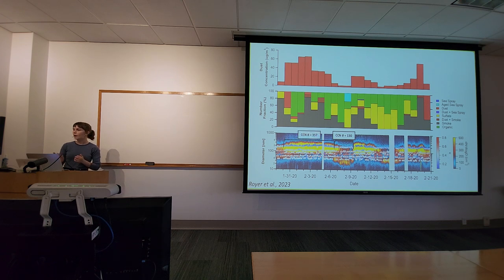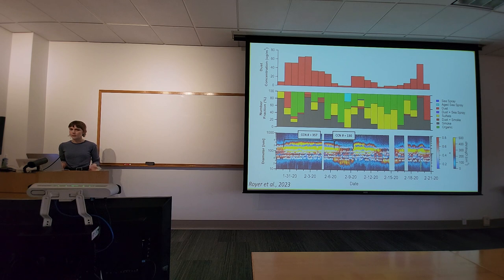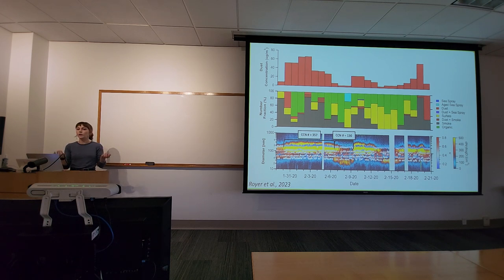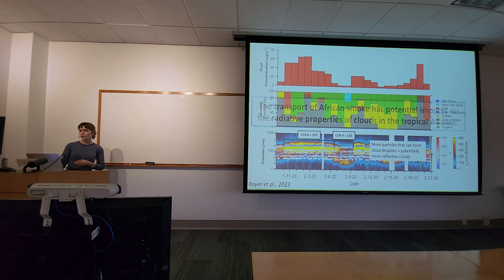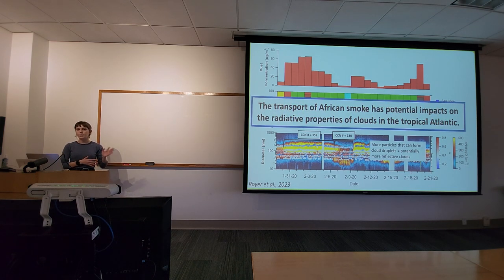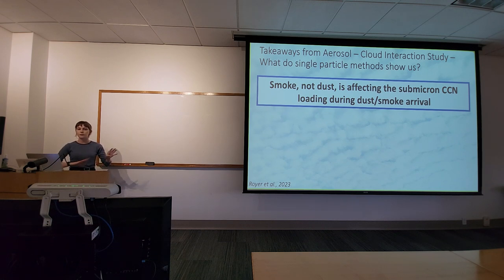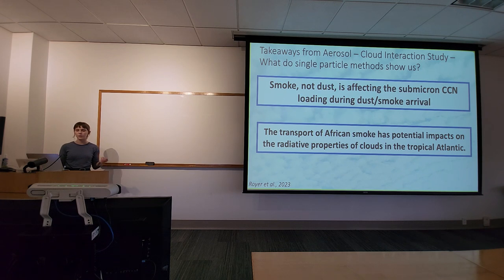With the arrival of these particles, we see not just a change in which particles act as CCN, but an increase in the number of CCN. Adding more aerosols that act as surfaces for water condensation produces more cloud droplets and therefore a more reflective cloud — the aerosol indirect effect. The main takeaway from chapter two is that smoke, not dust, affects sub-micron CCN loading, and transport of African smoke aerosols has the potential to impact the radiative properties of clouds in the tropical Atlantic.